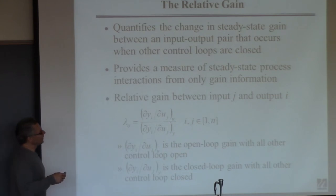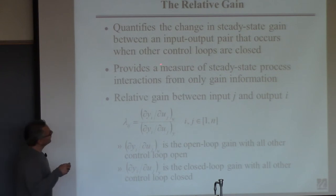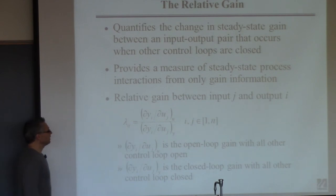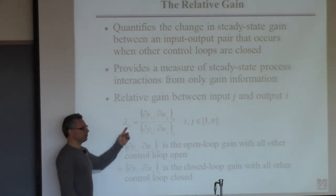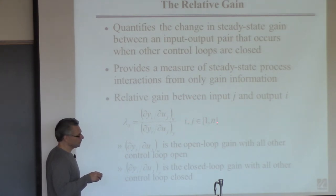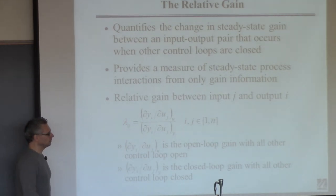Step one: admit that the gain changes when you turn the other controller on. The relative gain quantifies how much this gain changes. The first index of λᵢⱼ refers to the output and the second to the input. You calculate this for every input-output pair — λ₁₁, λ₁₂, λ₂₁, λ₂₂, and so on. It is a ratio of two gains, which I'll explain.